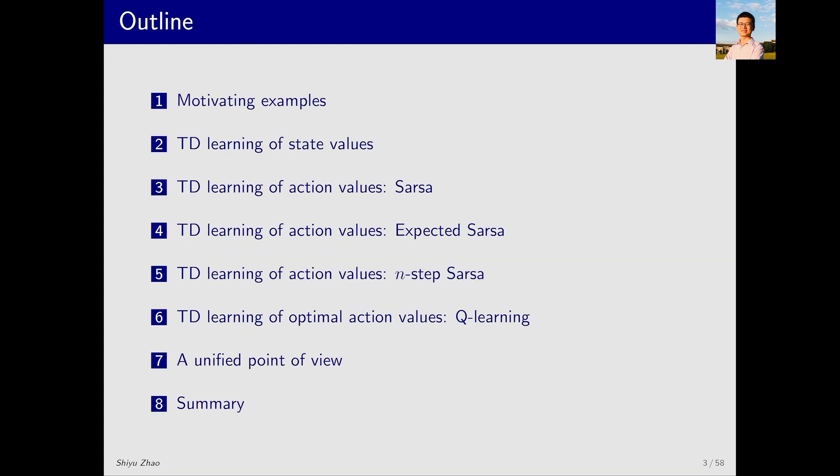This is the outline for today's lecture. First, I will provide some examples. Then sections 2, 3, 4, 5 and 6 will all introduce TD algorithms. What are the differences between these algorithms? The first TD algorithm we introduce is very basic and important. It estimates the state value of a given policy. The algorithms in sections 3, 4 and 5 estimate the action value of a given policy. They are all variants of an algorithm called SARSA. In section 6, we introduce an algorithm to directly estimate the optimal action value. This algorithm is the famous Q-learning algorithm.